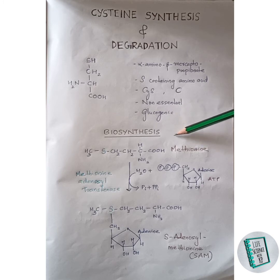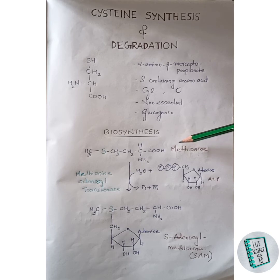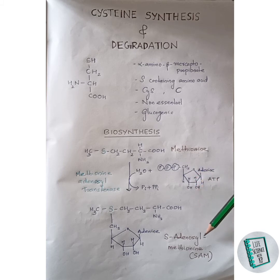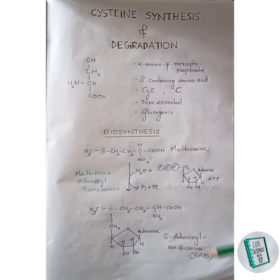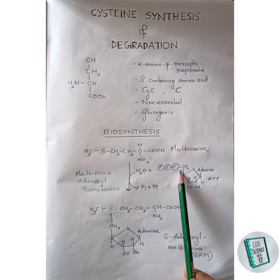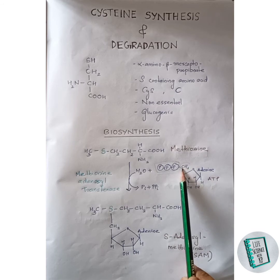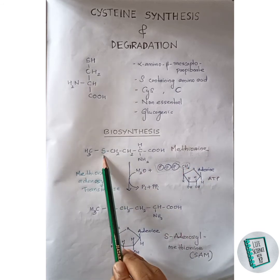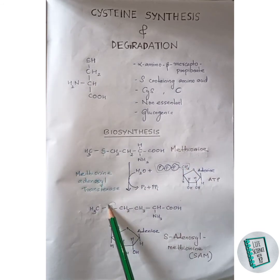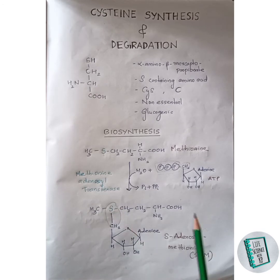Now let us move on to the biosynthesis of cysteine. The synthesis starts with methionine, and in the first reaction this methionine condenses with ATP and forms S-adenosyl methionine. The three phosphate groups of the ATP molecule get removed and this CH2 joins with the sulfur by a single bond, as shown here.